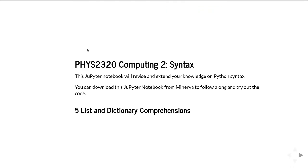This is 2320 Computing 2, and this is the fifth and final unit in the series of video tutorials on Python syntax. The notebook this is derived from is available to students registered at the University of Leeds on this module, and you can download it from the Minerva pages. In this unit we're going to concentrate on a bit of Python syntax that is particularly nice and convenient to use — it saves lines of code and makes things more readable — and that's list and dictionary comprehensions.